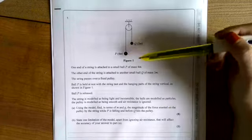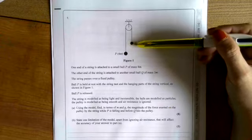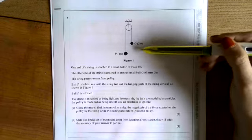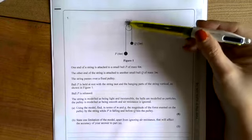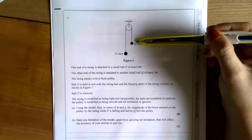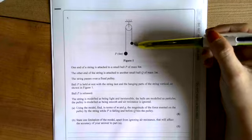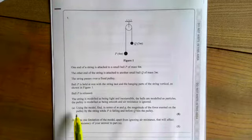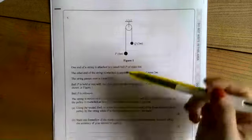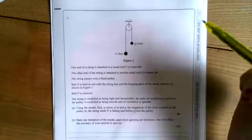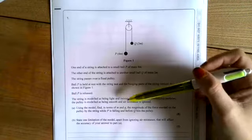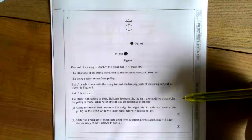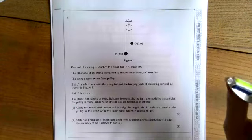A summary of it is it's got these two small balls of mass 4M and 3M, respectively, P and Q. It passes over a smooth pulley and the string is inextensible, so it's not elasticated at all. Part A says when the system is released, find in terms of M and G the magnitude of the force exerted on the pulley by the string.